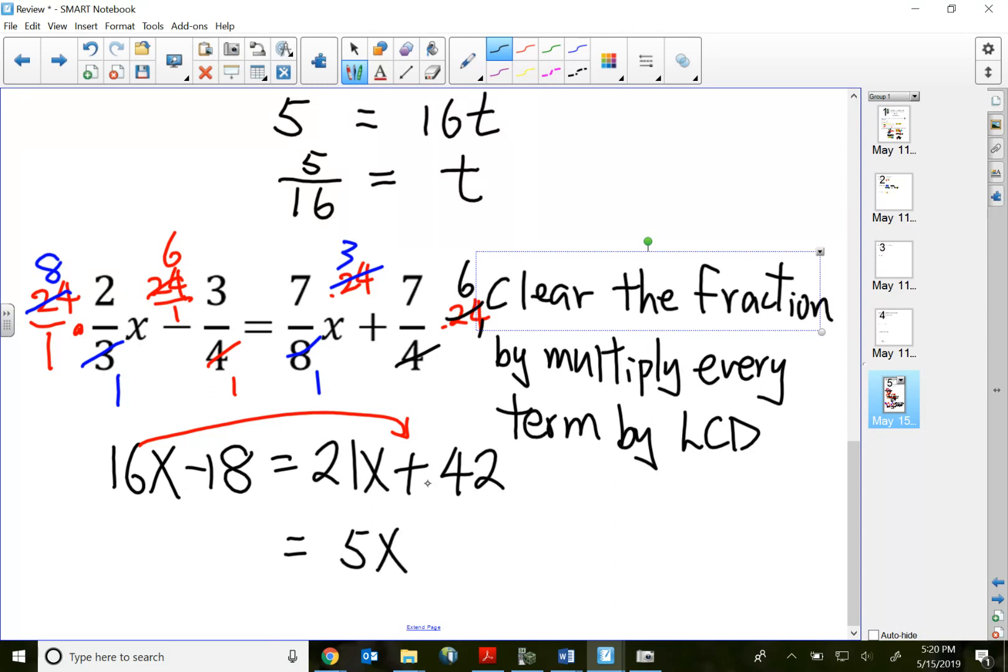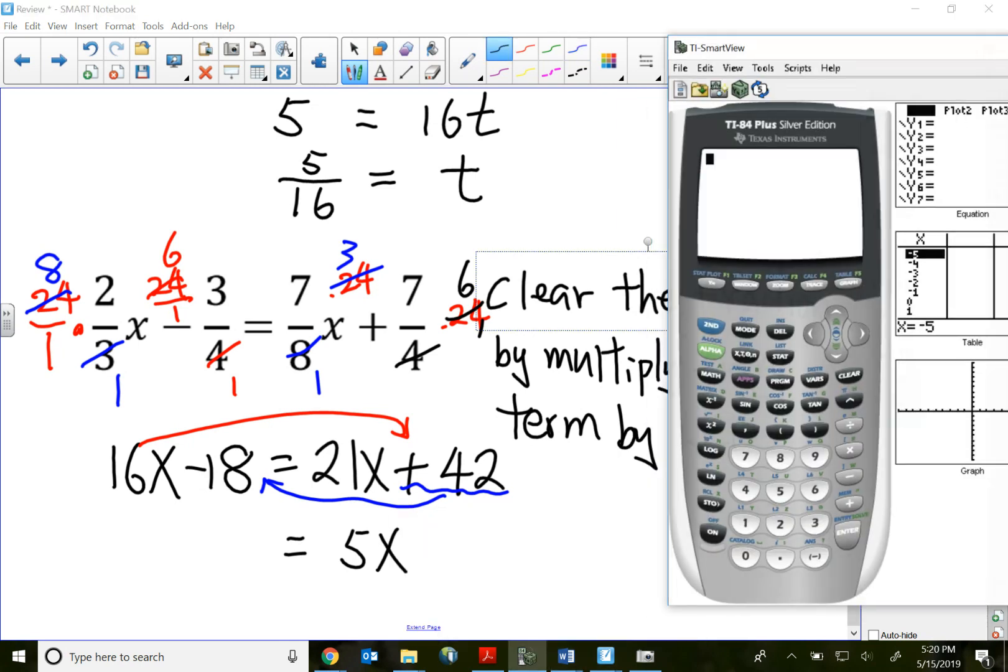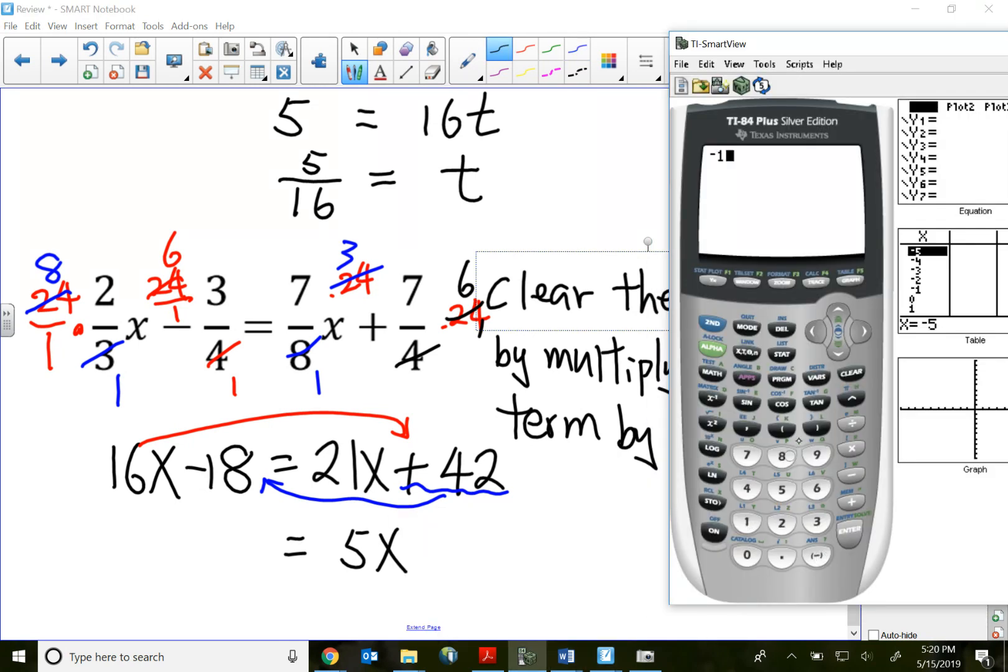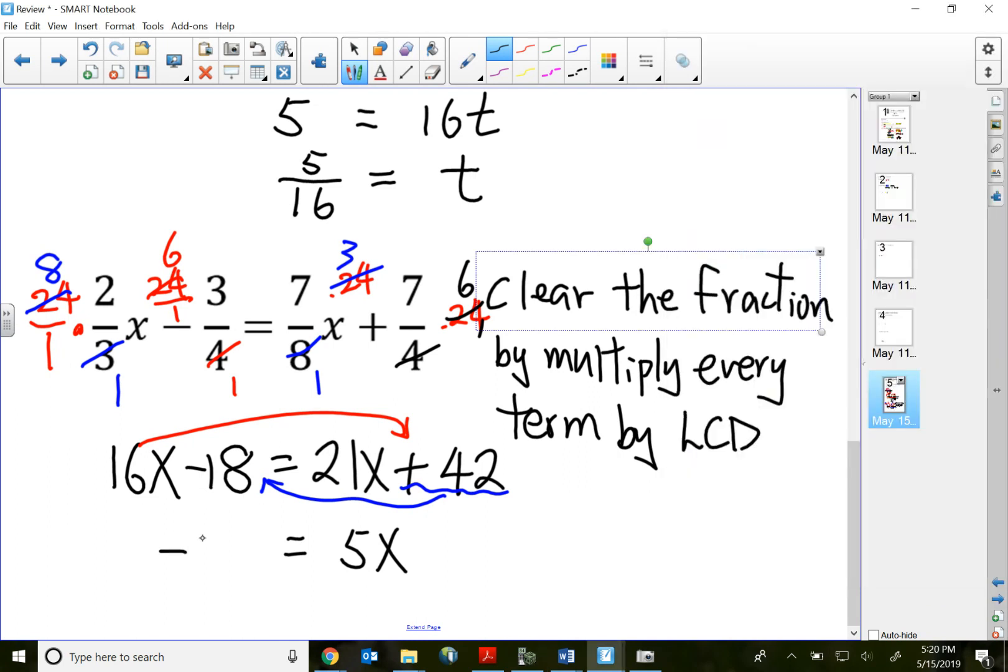I'm basically moving term and combining at the same time. Move the positive 42 over, that becomes negative. So in the calculator you can say that's negative 18 that was already on the left side minus 42, because positive 42 comes over, becomes negative. So that's negative 60. Divide both sides by the positive coefficient 5. My answer is going to be negative 12.